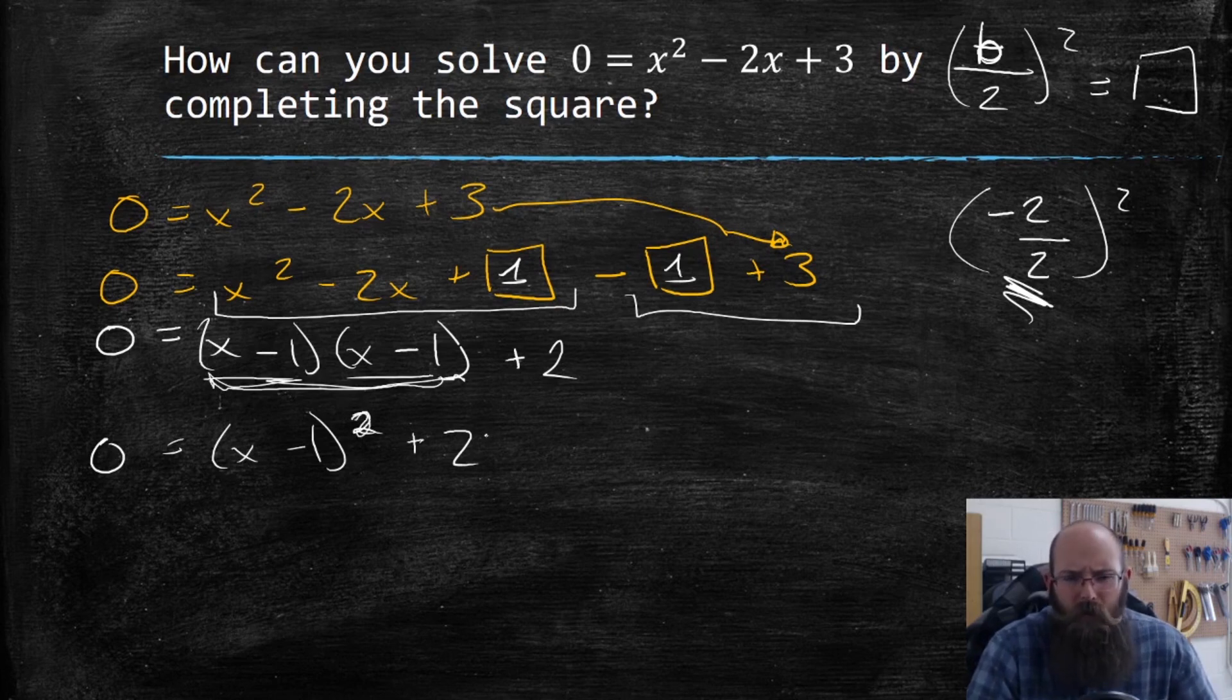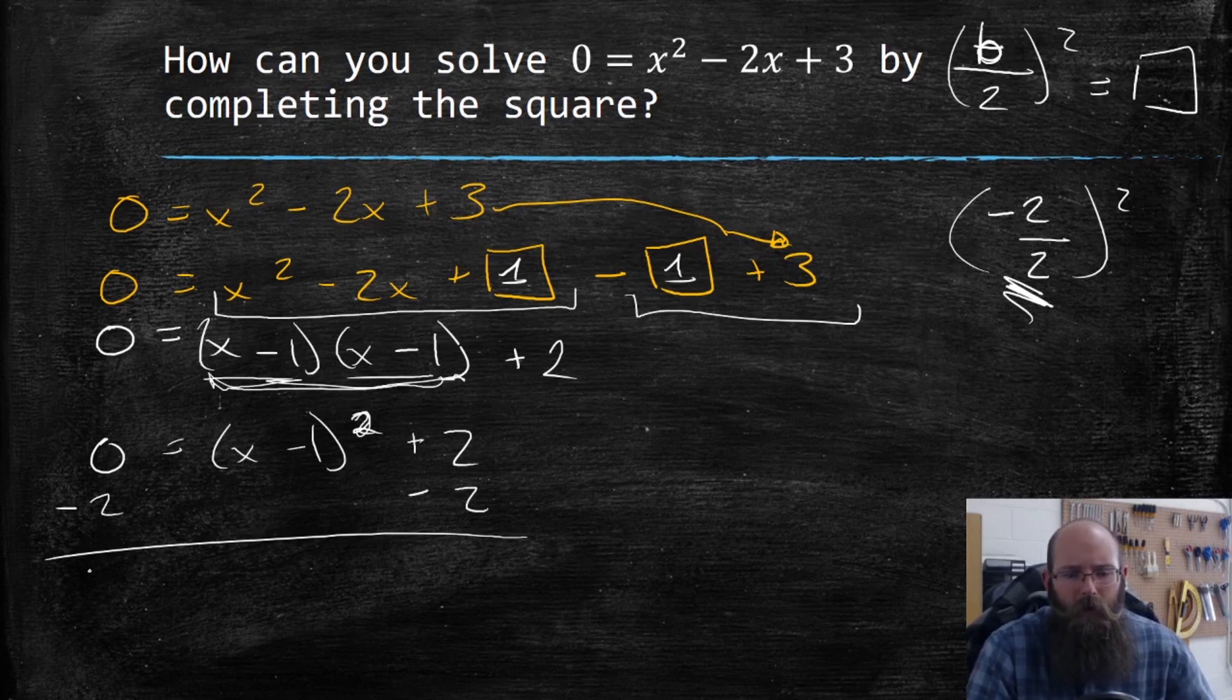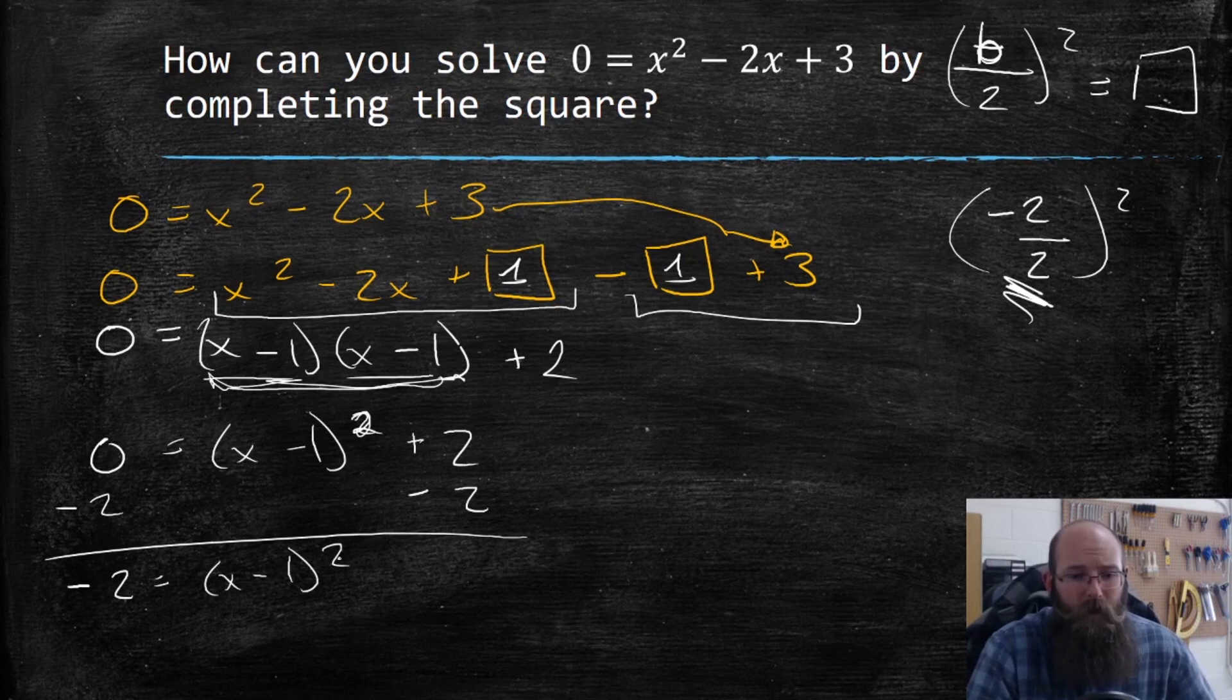Now I still have to solve it though, I'm not done yet. So I'm going to subtract this two over. Now I need to write all those down. But now it's looking a little bit shady, right? I have a stuff over here that's square, so I need to square root it now.